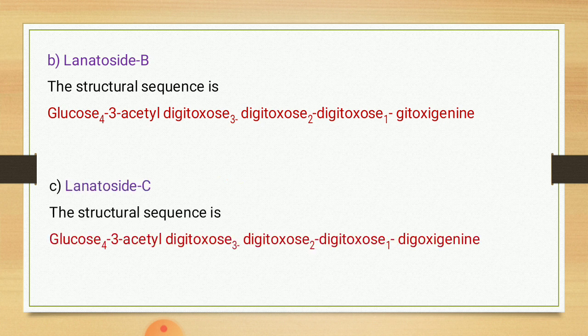The third glycoside is lanatoside C. Here, the aglycon part is digoxigenin, and the remaining glycon part is the same as lanatoside A or lanatoside B. So the structural sequence of lanatoside C is: digoxigenin → digitoxose 1 → digitoxose 2 → acetyl-digitoxose 3 → glucose. So this covers the first source of cardiac glycoside, digitalis lanata, which consists of lanatoside A, lanatoside B, and lanatoside C.